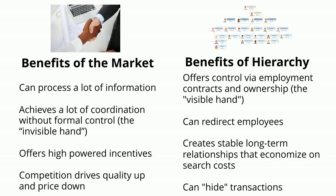Markets and hierarchies provide different kinds of benefits. The market can process a lot of information and achieves a lot of coordination without formal control — this is known as the invisible hand. It offers high-powered incentives because producers keep the profit of their work, and competition drives quality up while driving price down.